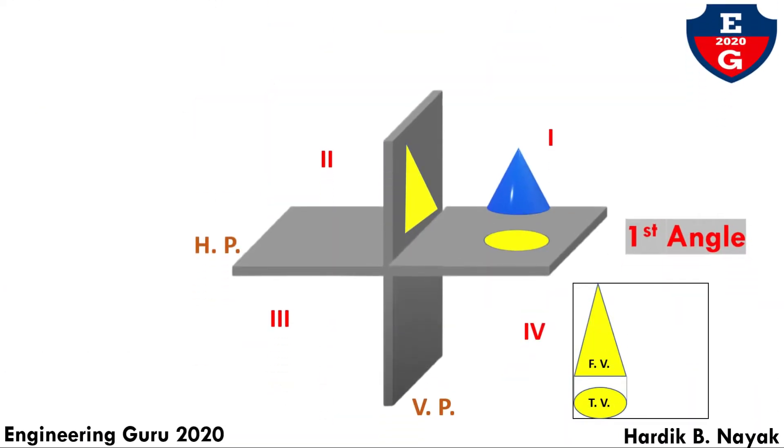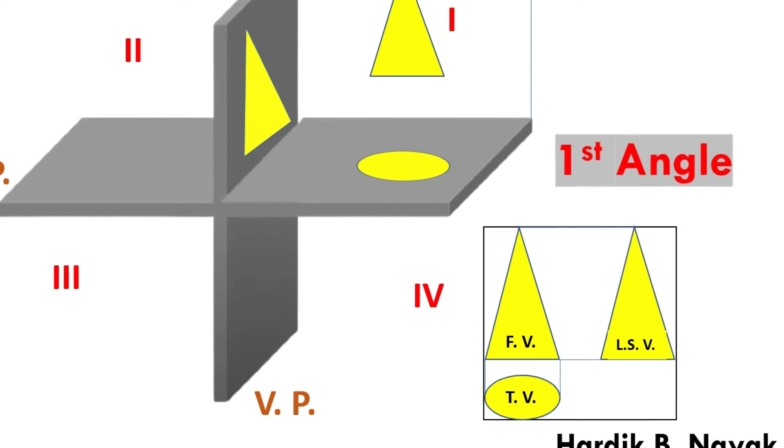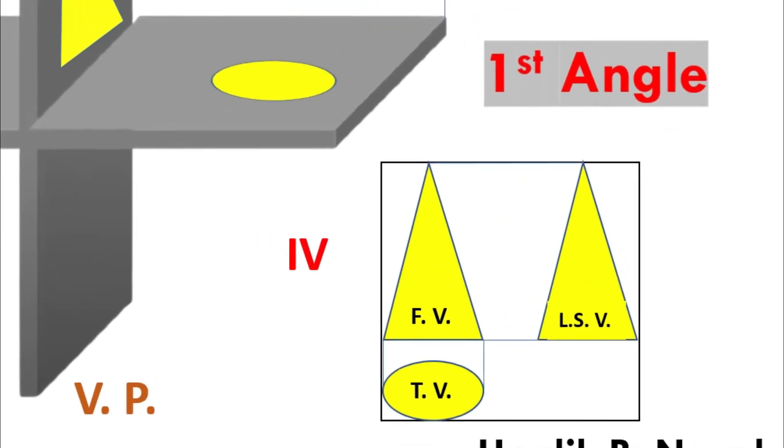When observer sees from left side, it will be projected on the side plane. That will go to the right hand side. So in first angle, left hand side view goes on right hand side.